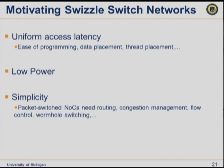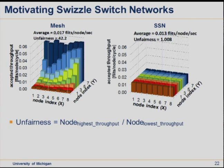With uniform latency, you're not worried about co-locating threads that share data — everything is equidistant, easing thread placement and data migration management. We've shown it can help with power when scaling down, and the design is simpler: no congestion management, flow control, wormhole routing, or advanced NOC techniques required. We ran synthetic traffic studies comparing the mesh against Swizzle Switch.